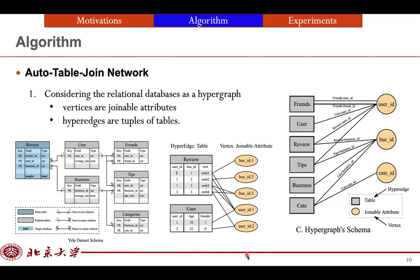Then we consider the relational database as the hypergraph, where the vertices are joinable attributes, and the hyperedges are tuples of table. For example, the user ID is the joinable attribute because it's shown in review table, in user table, in friends table, and the business ID is also another joinable attribute.